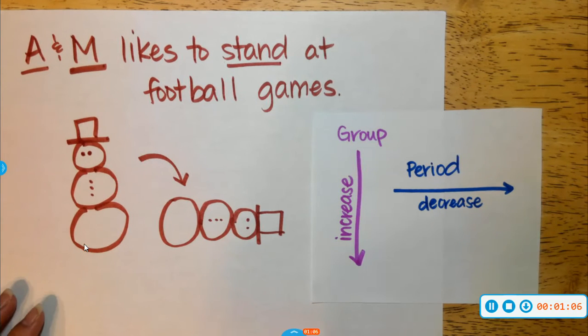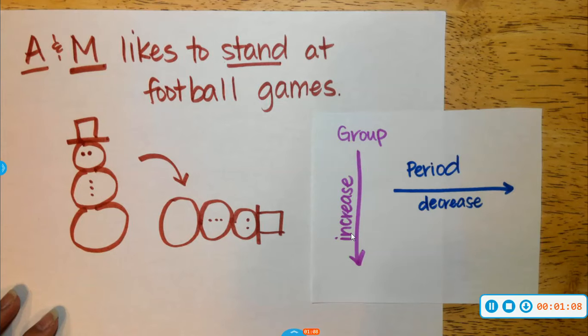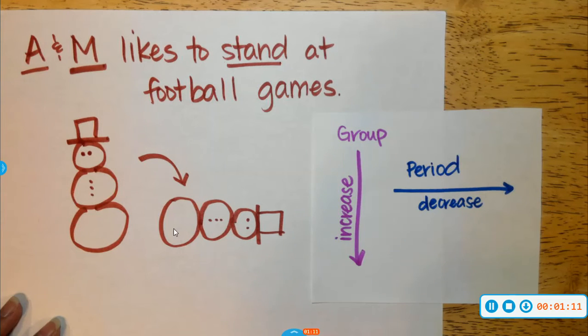As we go down the group, our trend increases, and then when that snowman falls over, our trend decreases.